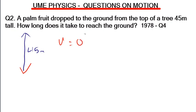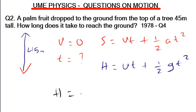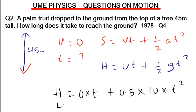The best equation of motion for vertical motion is s = ut + ½at², which becomes h = ut + ½gt². Substituting our parameters: h = 45, u = 0, g = 10. So 45 = 0 × t + 0.5 × 10 × t², which simplifies to 45 = 5t².